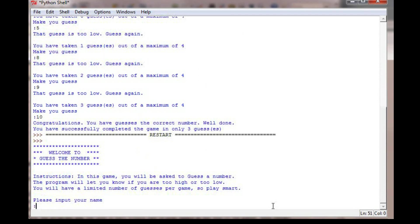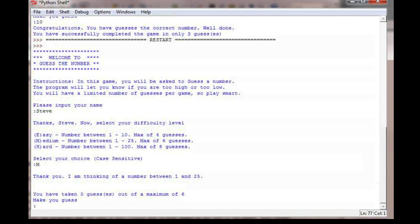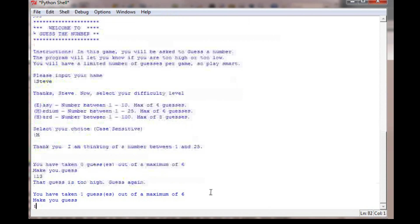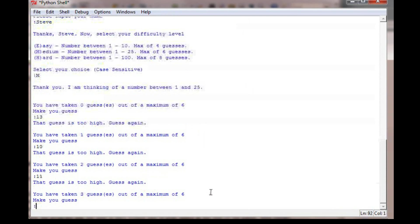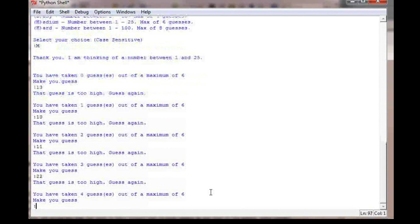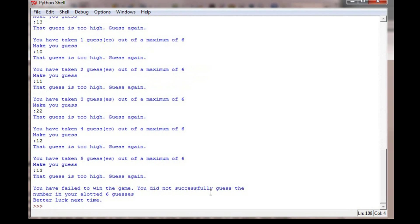I'm going to run this program again. And let's try it with a different difficulty level. So please input your name, Steve. Last time we did easy. This time we're going to do medium. And my message now updates correctly. It says thank you. I'm thinking of a number between 1 and 25 this time. You've taken 0 guesses out of a maximum of 6. So let's go ahead and start with 13. 13 is too high. Let's guess 10. 10 is too high. I'm not really good at this game. So I'm going to check and make sure that it works correctly when the user doesn't guess the correct number. I'm going to guess 22. That's 4 guesses. I'm going to guess 12 again. And this guess should be the last one. I'm going to guess 13. And you have failed to win the game. You did not successfully guess the number in your allotted 6 guesses. Better luck next time.